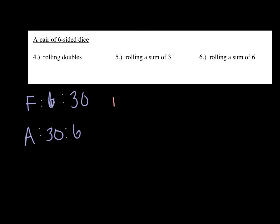So number 5, rolling a sum of 3. We could have 1 and 2, or 2 and 1. So we've got 2 options of rolling a 3. 34 options of not rolling a 3.